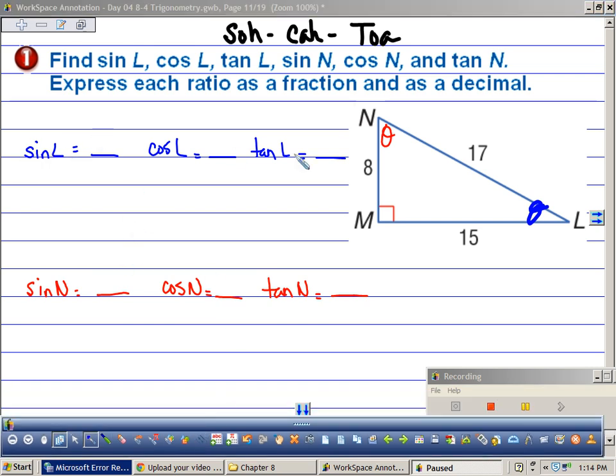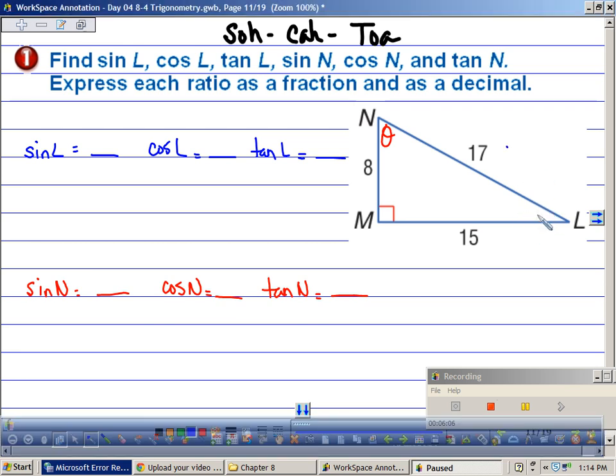So let's begin. The sine of L. So if I'm talking about this angle right here, and I'm talking about sine, which is soa, then I would be talking about the opposite side of L, which is 8, over the hypotenuse, which is 17. See it now? What about cosine? Cosine is ca. Adjacent over hypotenuse. So what would be the adjacent side to L? 15 over 17. And the tangent is toa, which is opposite over adjacent.